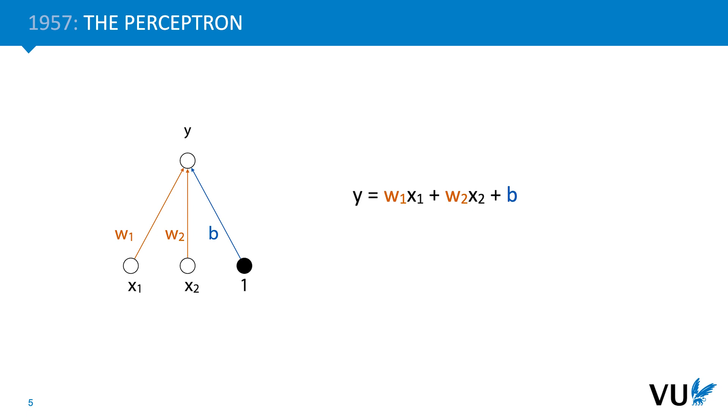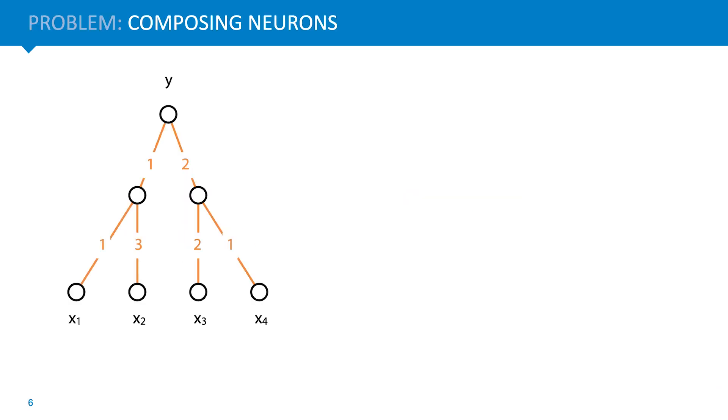But the real power of the brain doesn't come from single neurons. It comes from chaining together a large number of neurons. So can we do the same thing with perceptrons? Link the output of one perceptron to one of the inputs of the next in a large network, and so make the whole more powerful than any single perceptron could be. This is where the perceptron turns out to be too simple an abstraction. Composing perceptrons, making the output of one the input of another, doesn't make them more powerful. As an example, here on the left we have chained together three perceptrons.